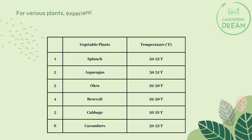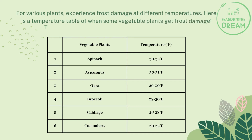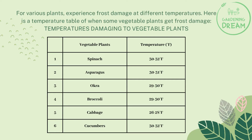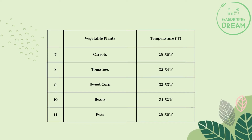Various plants experience frost damage at different temperatures. Here is a temperature table for when some vegetable plants get frost damage: spinach 30–32°F, asparagus 30–31°F, okra 29–30°F, broccoli 29–30°F, cabbage 26–28°F, cucumbers 30–32°F, carrots 28–30°F, tomatoes 32–34°F, sweet corn 32–33°F, beans 31–32°F, and peas 28–30°F.